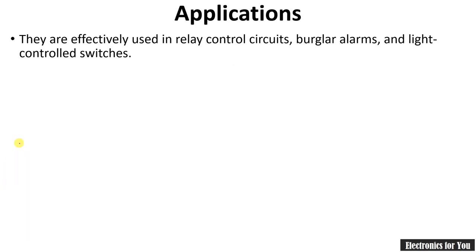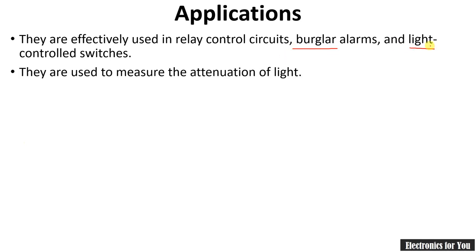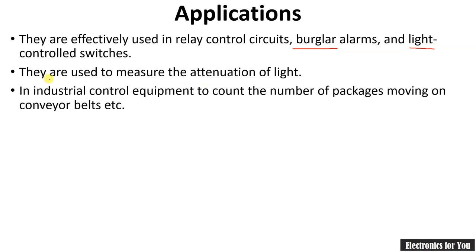Applications of the photoconductive transducer: they are used in burglar alarms, light control switches, and control circuits. They are used to measure the attenuation of light, and in industrial control equipment to count the number of packages — they can be used as an object counter.